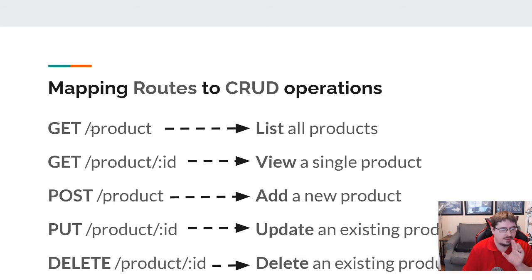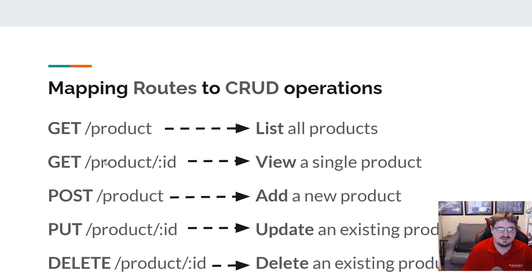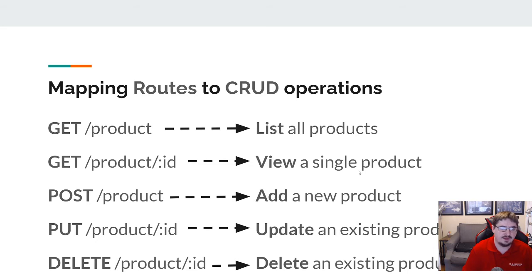Typically the way we do this mapping is: I've got a route to GET /product — that route would give me a list of products. Or I could say I want to get a specific product, so I'd say /product/:id — that would be to view a single product. Without an ID, it gives me all the products; with the ID, it gives me a single product.